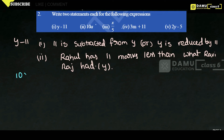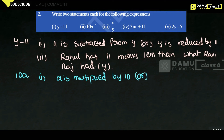The second expression is 10a. The first statement you can write is: 'a is multiplied by 10.' Or you can write: '10 times of a.' Times means multiplication.